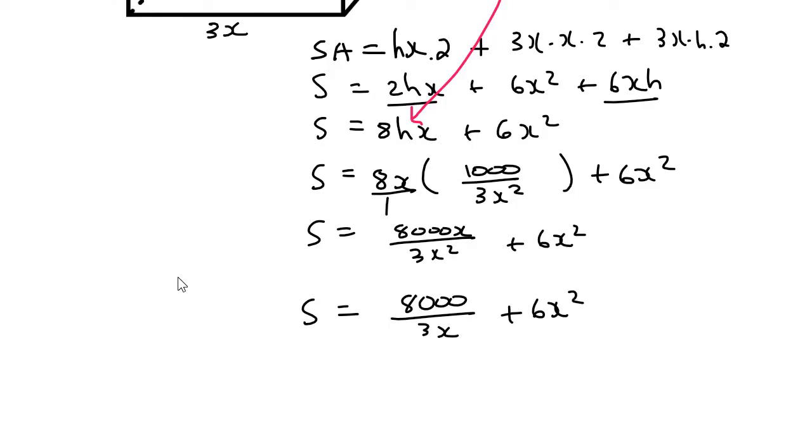Now, our goal eventually is to find the maximum surface area. So to find minimums and maximums, it's always the first derivative equal to 0. So we need to be able to take the first derivative of this. However, what I would first do is bring the x to the top. So it would be 8,000 over 3x to the minus 1 plus 6x squared.